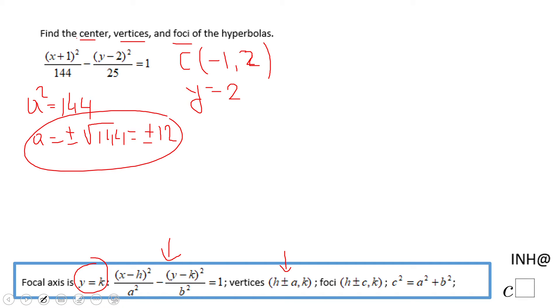So looking to this center, which is negative one and two, we need to move 12 left, 12 right. So that will give us the first vertex. When we move 12 left from negative one, that will be negative 13. When we move 12 right from negative one, we're going to be to 11.